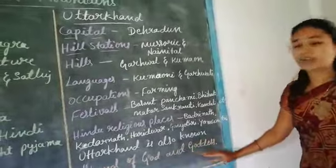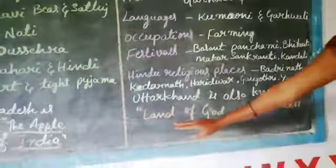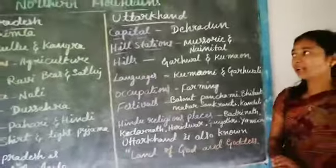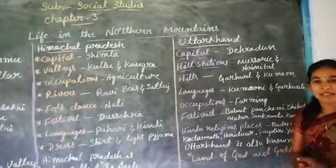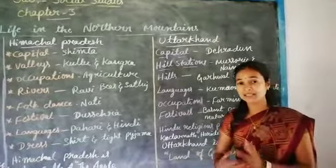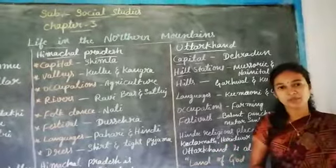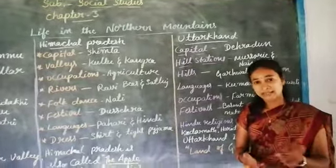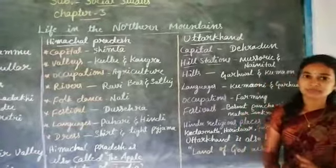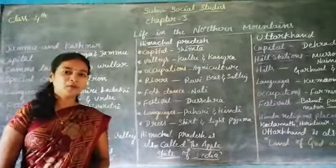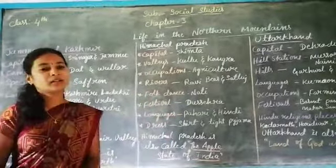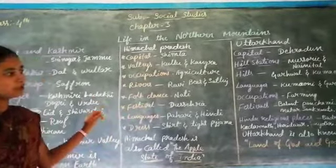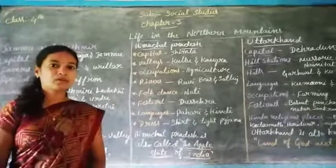Uttarakhand is also known as the Land of Gods and Goddesses. For homework, write all points about Jammu and Kashmir, Himachal Pradesh, and all state information — three points for each state. Thank you.